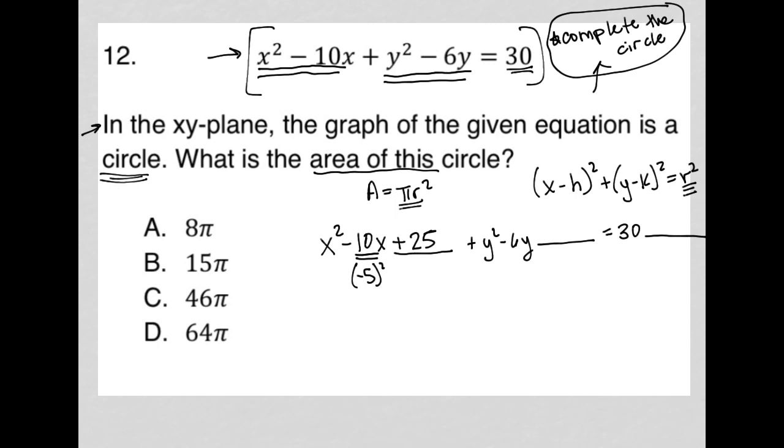We do the exact same thing with the y side. Half of negative 6 is negative 3. We square it. Negative 3 squared is positive 9. We add that to the y side of our polynomial. Now, because we've added these numbers that were not there prior, I have to add them also on the right-hand side of the equation in order to balance out this equation. I can't just add numbers on the left and not balance out the algebra by adding them also to the right.